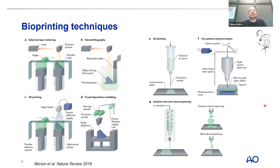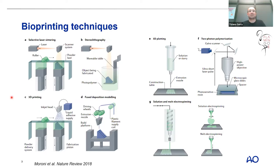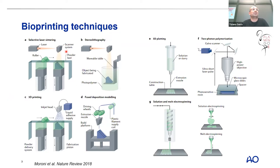As you can see in this slide, there are many ways to organize materials, tissue, cells, and extracellular matrix in a hierarchically shaped construct in order to recapitulate the in vivo physiological condition in vitro. We have, for instance, selective laser sintering and stereolithography, which are mainly based on laser and light cross-linking approaches.